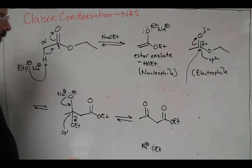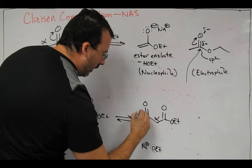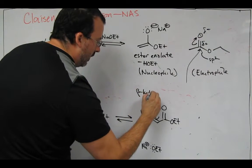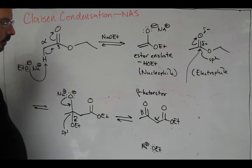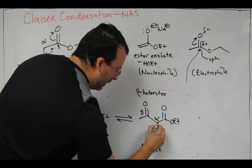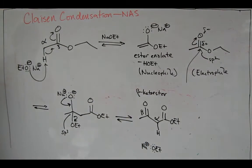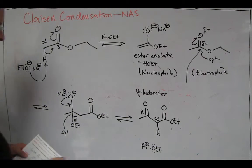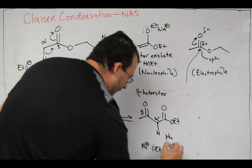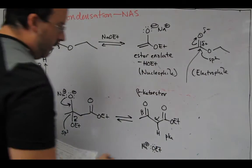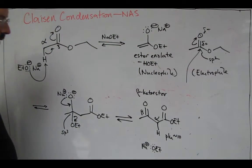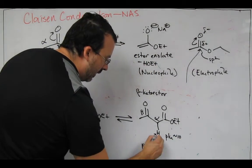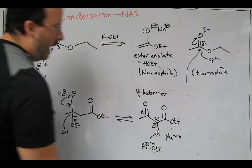Because now what we've done, we've generated a beta-ketoester. And we know that this has a very acidic proton here at the alpha carbon, which is sandwiched between two carbonyls. This has a pKa of 10. We know that sodium ethoxide is sufficiently basic to abstract that alpha proton.